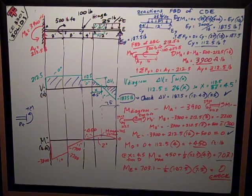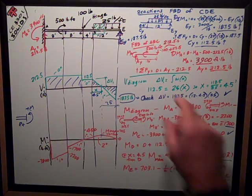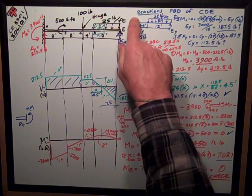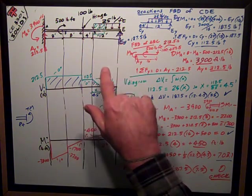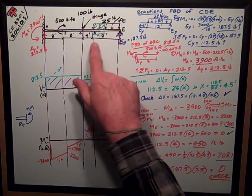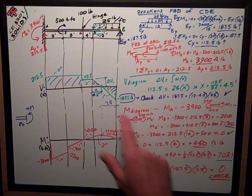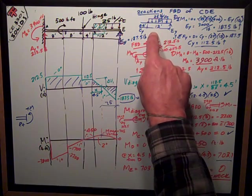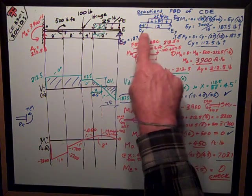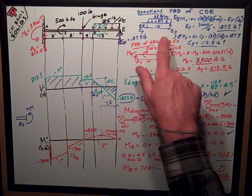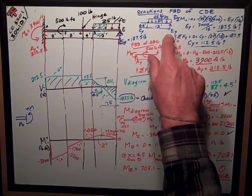The first things I want to know to do a diagram is I need to solve for my reactions. Let's do a free body diagram of the right side called CDE. I have a little simply supported beam with reaction at this end, reaction at the roller support.